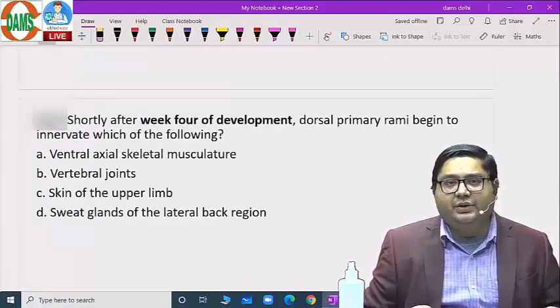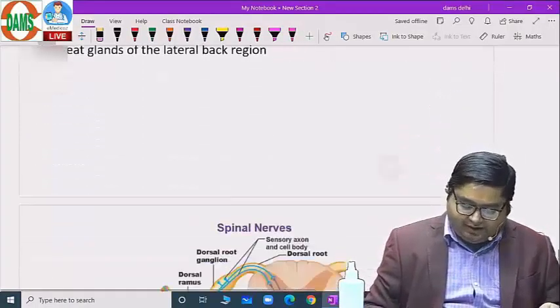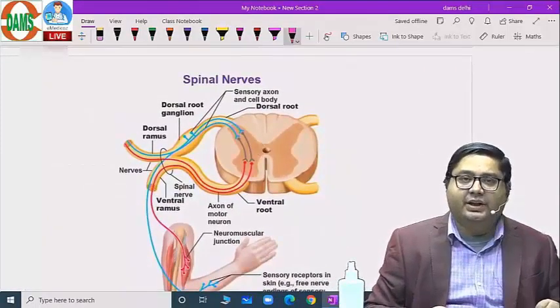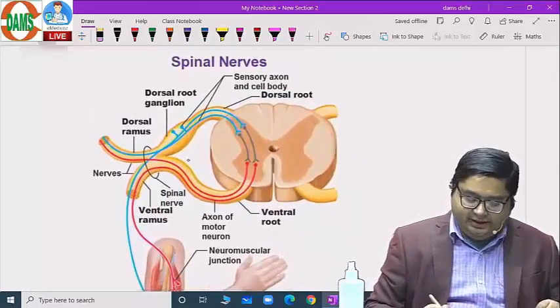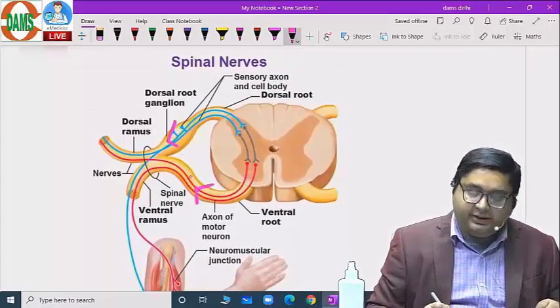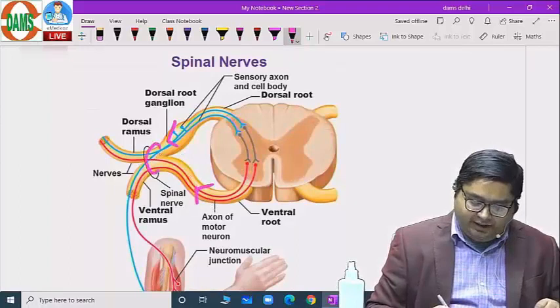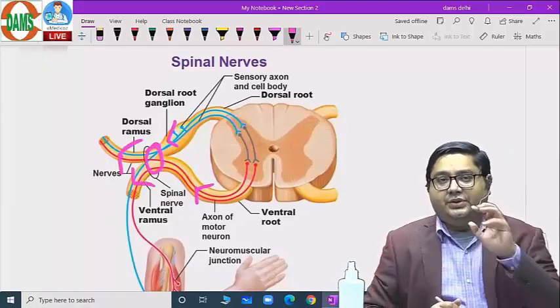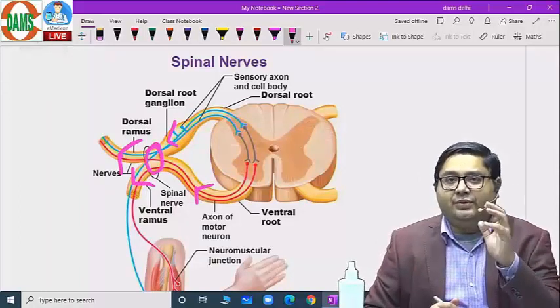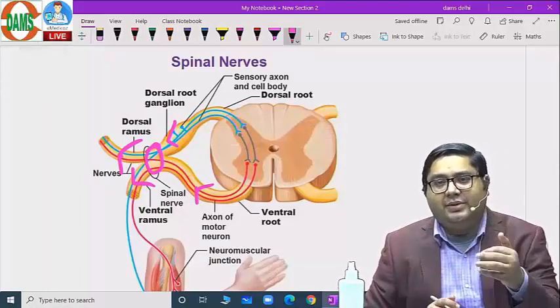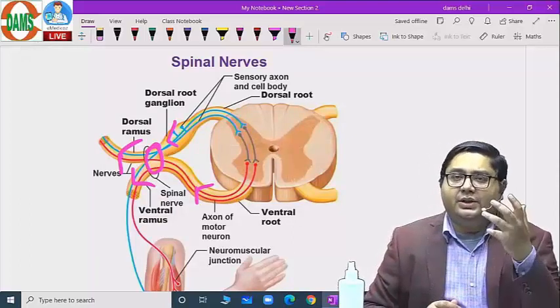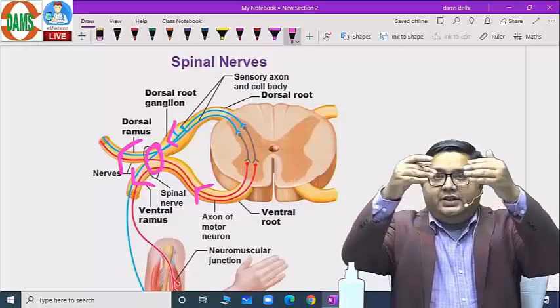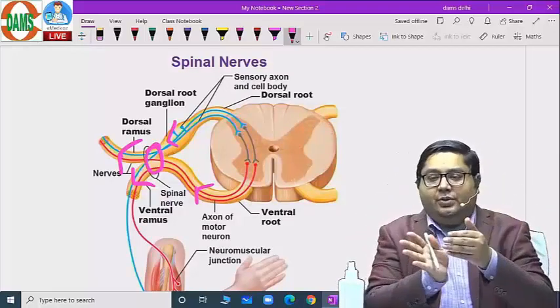Let us look at the dorsal primary rami. This is our spinal cord. Here we can see the dorsal root and the ventral root. Both of them unite to make the trunk, then we have the dorsal ramus and the ventral ramus. Basically dorsal ramus and ventral ramus both of them are mixed, so they contain sensory fibers for the cutaneous distribution and motor fibers for the muscles.